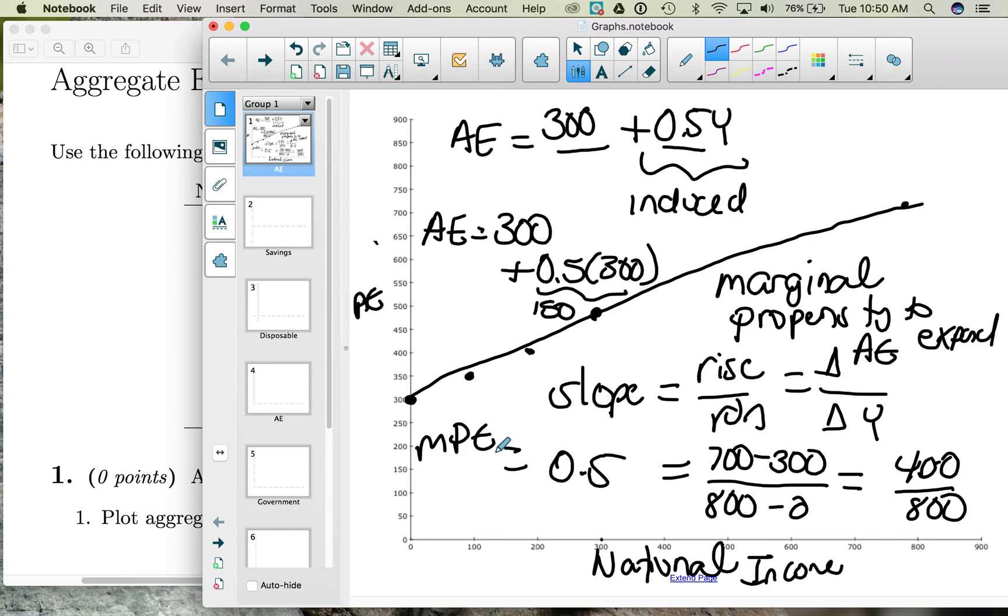Now when we look at aggregate expenditures, this function, what we do is we want to determine where the economy is at equilibrium. How big is this economy? Well to do that we draw a 45 degree line that shows all the points where income and aggregate expenditures are equal.